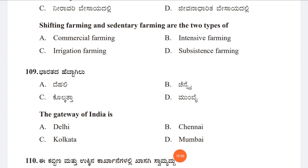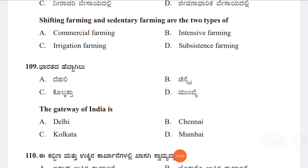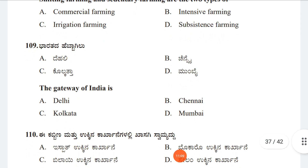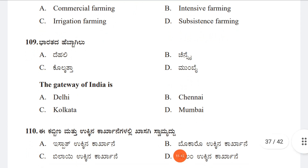Question 109: Which city is known as the Gateway of India? Option A: Delhi, Option B: Chennai, Option C: Kolkata, Option D: Mumbai. Mumbai is known as the Gateway of India, so Option D is correct.